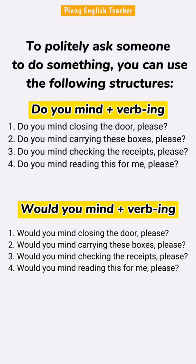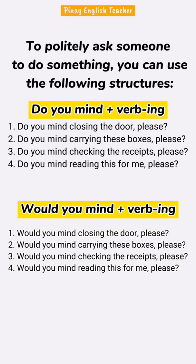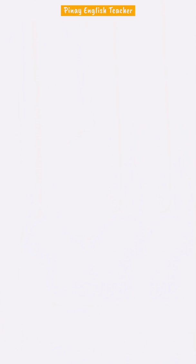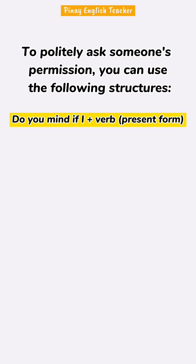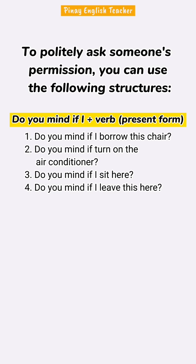In these questions, pinalitan lang natin yung 'do' ng 'would.' When we want to politely ask someone's permission, then we can use the following structures. The first one is 'Do you mind if I' plus a verb in the present form. Examples: Do you mind if I borrow this chair? Do you mind if I turn on the air conditioner? Do you mind if I sit here? Do you mind if I leave this here? Tandaan nyo ha, after ng 'Do you mind if I,' kailangan ang verb na gagamitin ninyo ay nasa present form — borrow, turn on, sit, leave.